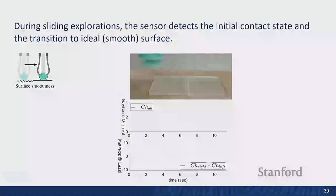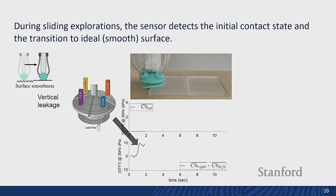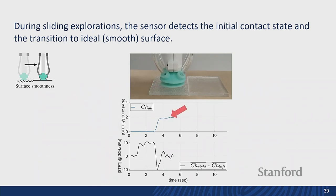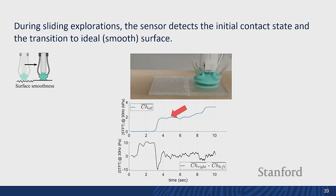Using lowered vacuum pressure we can slide on surfaces. In this example, starting from the left side, misalignment produces a pressure distribution matching the vertical leakage case. As we move along the surface the pressure distribution changes to correspond to the horizontal leakage simulation. Continuing along, we track the overall pressure response and finally find the smoothest surface by looking at the frequency response of the overall channel.